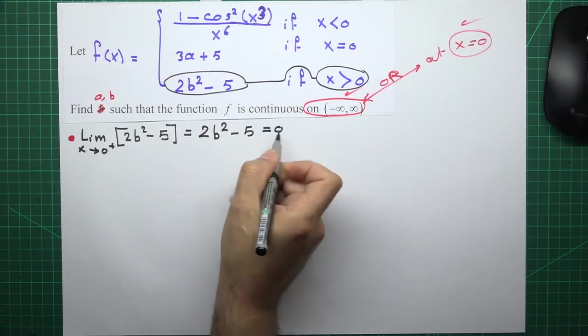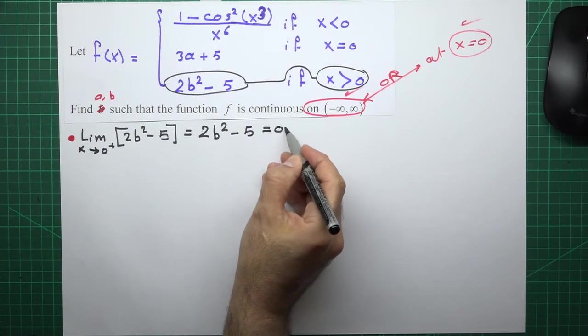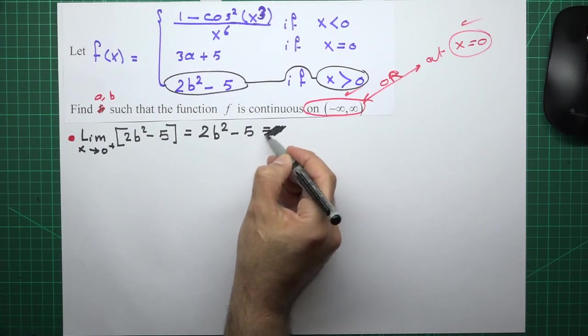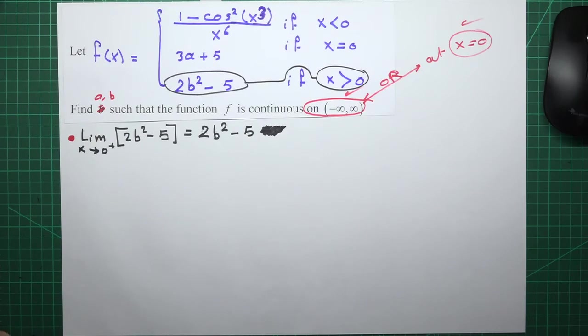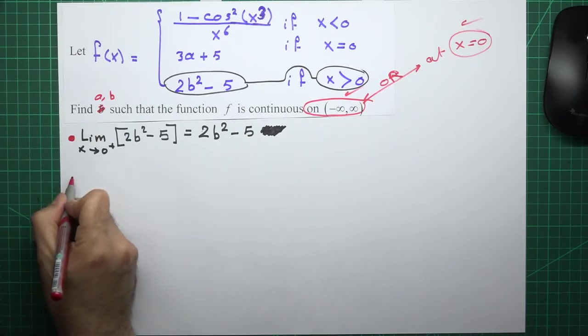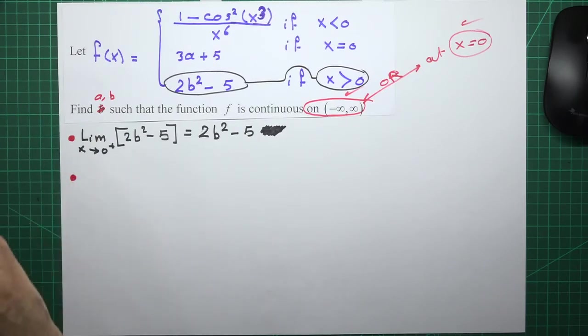This is incorrect, 2b squared. We can see that the limit is this function.